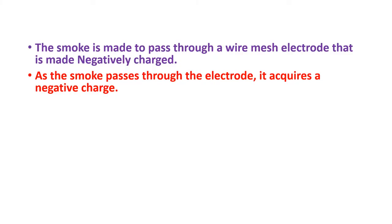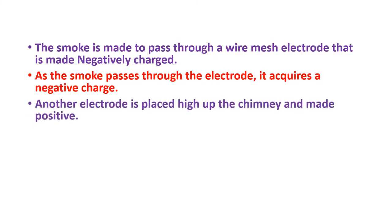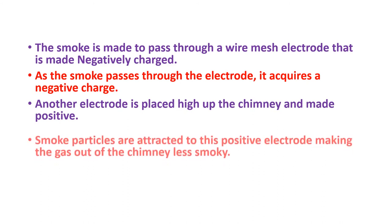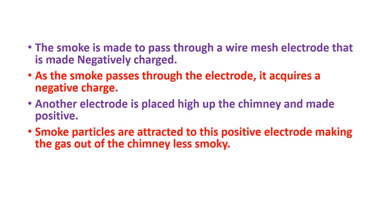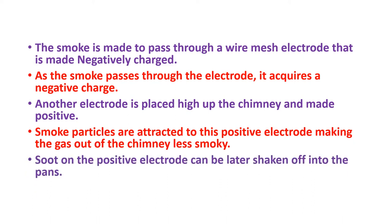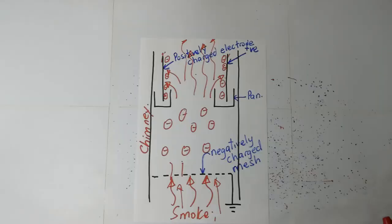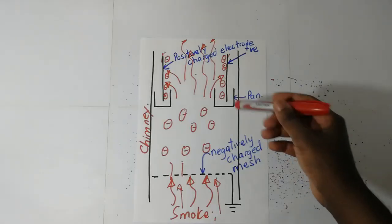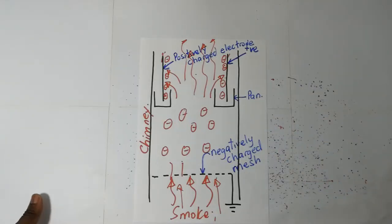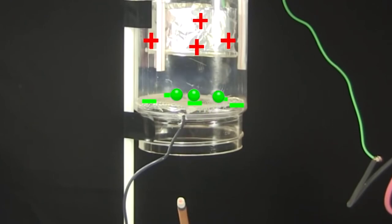The smoke particles are attracted to this electrode, making the gas that is going through less smoky. You can mention that the soot that gets attached here is shaken off later on and dropped into the pans.